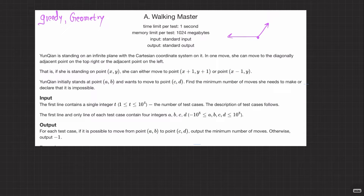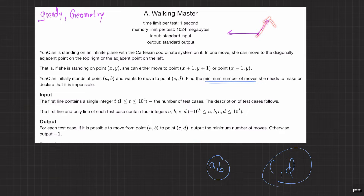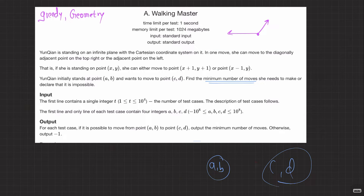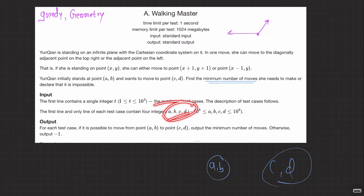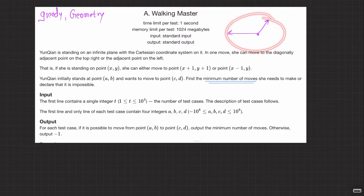We are asking for the minimum number of moves she needs to make, or declare that it is impossible. So the output is: if it is possible to move from point (a, b) to (c, d), output the minimum number of moves; otherwise output -1. The only moves available are diagonal up-right or left.